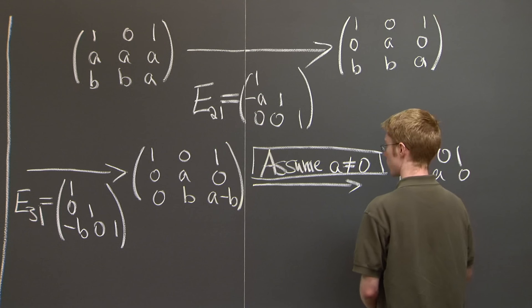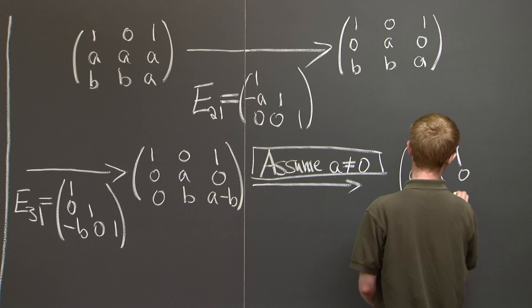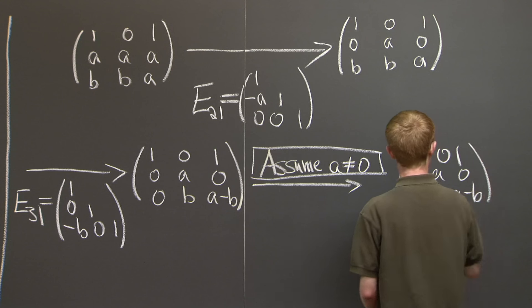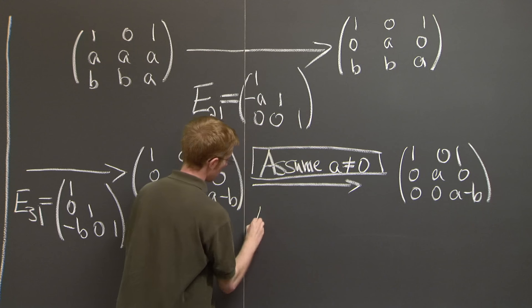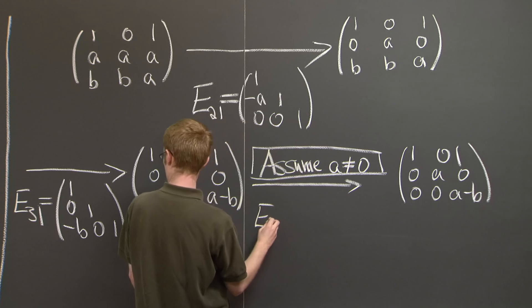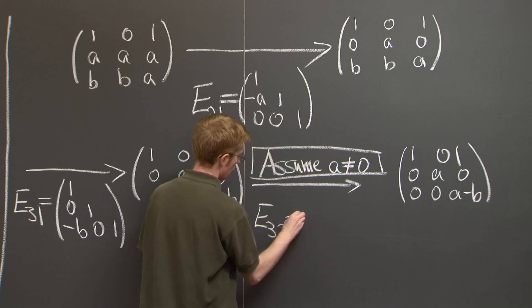And we just get this: a minus b. Good. And let's write down our elimination matrix.